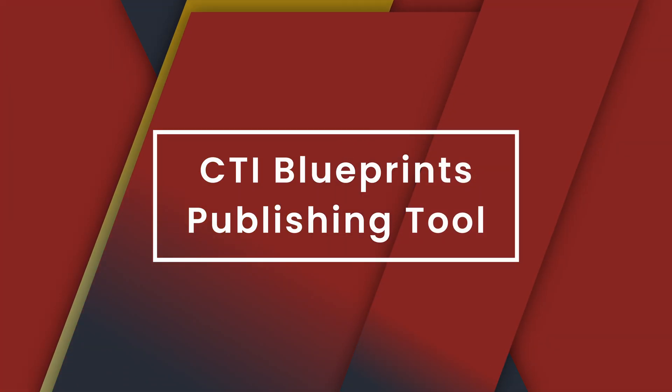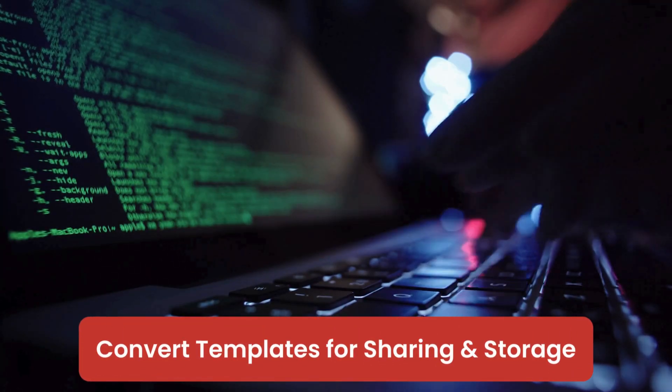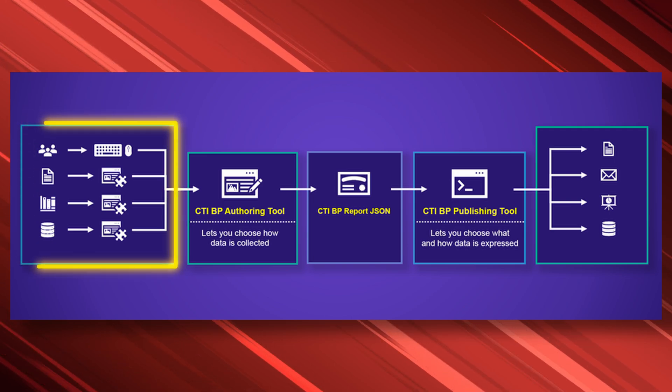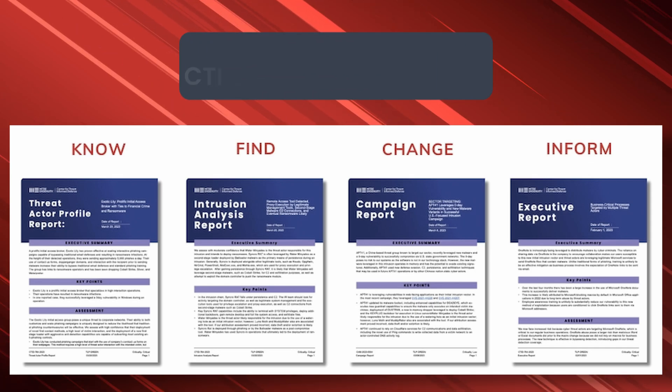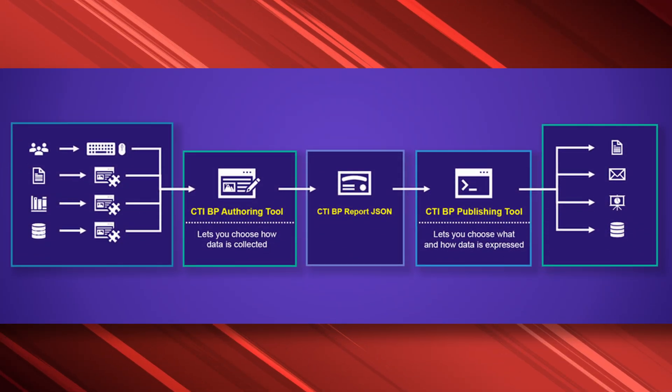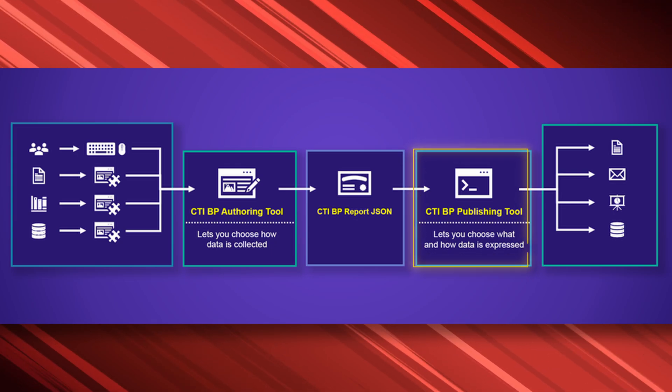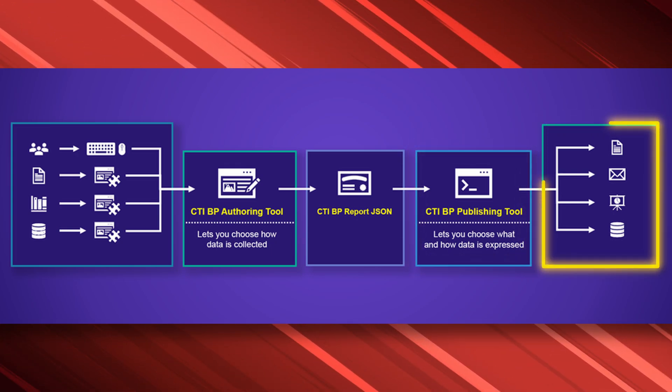The final component of the CTI Blueprints project is the publishing tool. Reports you create with the authoring tool are saved in JSON format. To export reports to other formats and share them with intelligence consumers, you can use the publishing tool, which converts saved templates into common formats — currently Microsoft Word docs or PDF. To recap: intelligence is gathered and processed by the CTI analyst, the authoring tool organizes that data into a structured report using one of the four templates, and then the publishing tool converts the report into a format that can be easily distributed to your intelligence consumer.